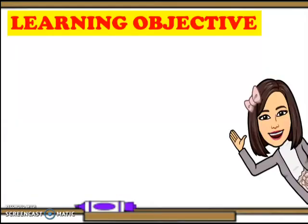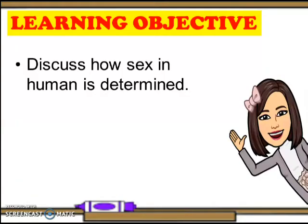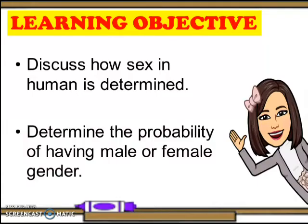Learning objectives. First, discuss how sex in humans is determined. Second, determine the probability of having male or female gender.